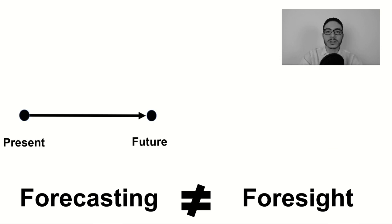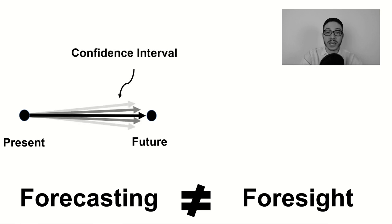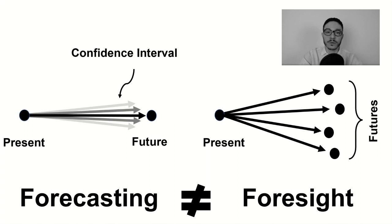Secondly, forecasts inherently refer to one single future. When we're looking at the outcome of one variable, we're looking at one variable and its behavior in what you think would be the most probable future. Of course, sometimes there might be sensitivity analysis or confidence intervals attached to that variable, so the variation will be presented plus and minus above and below a specific value. But in general, this refers to one future. On the other hand, in foresight we're looking at a variety of different futures, a plurality of scenarios.